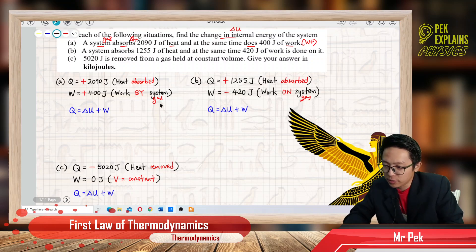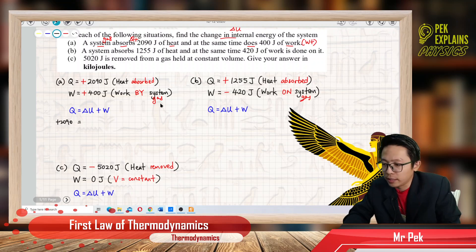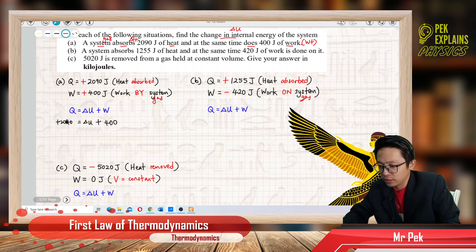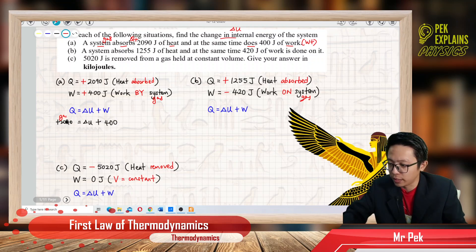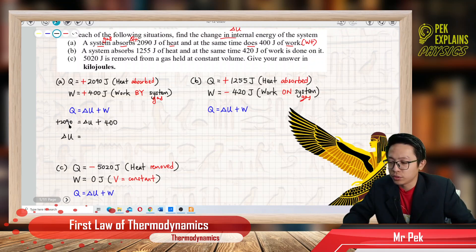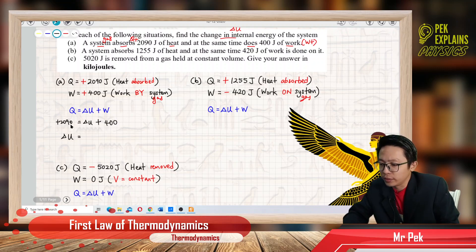Let us substitute the information. Our Q is positive 2090. Our work done is positive 400. So delta U equals Q minus W: 2090 minus 400. We get the answer positive 1690 joule.